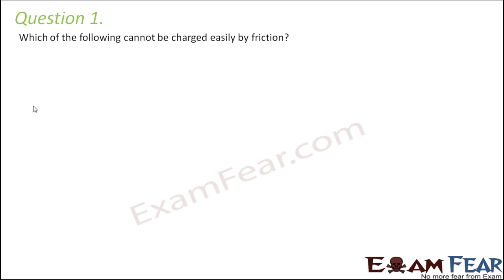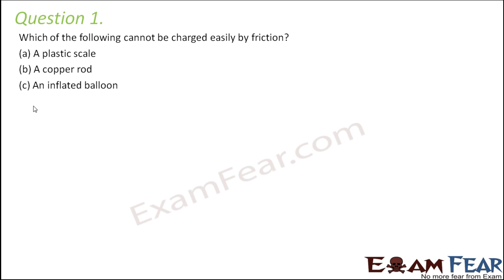Question number 1: Which of the following cannot be charged easily by friction? Charging by friction means rubbing. The options are: a plastic scale, a copper rod, an inflated balloon, and a woolen cloth.